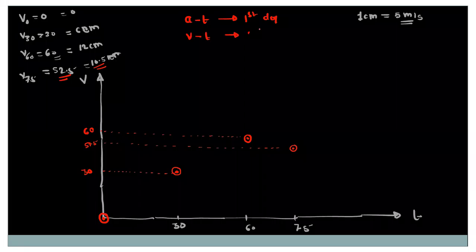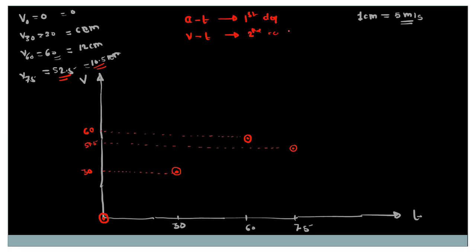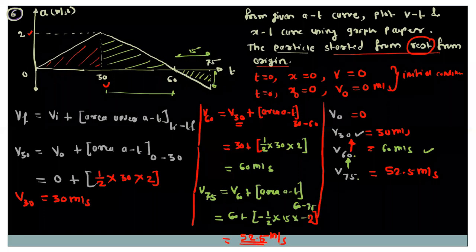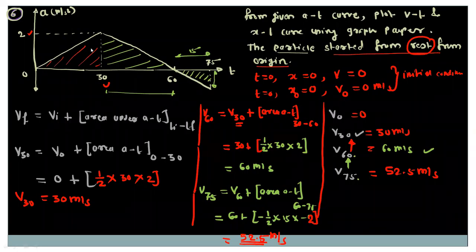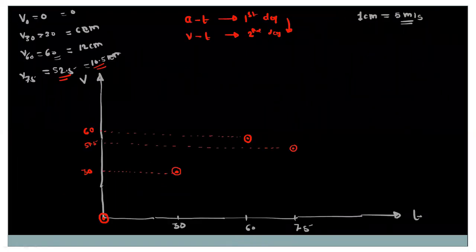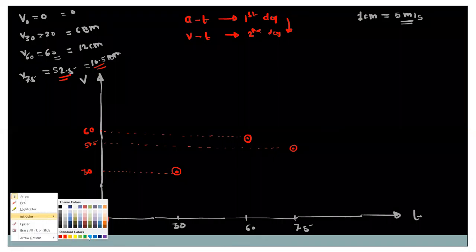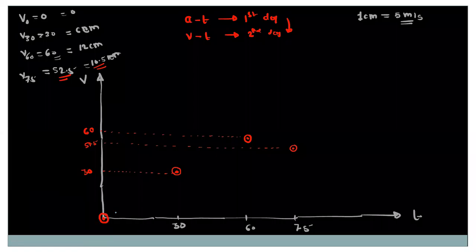You have to connect these points. To do so, refer to the standard graphs. If the acceleration-time graph is a first-degree curve, then the velocity-time graph will be a second-degree curve, because we are integrating from the acceleration-time graph to get the velocity-time graph — that means we are increasing the degree of the polynomial. Here the acceleration-time diagram is a straight line, so the velocity-time graph will be a parabola — a second-degree curve.